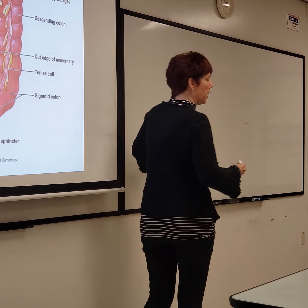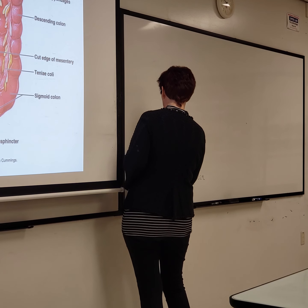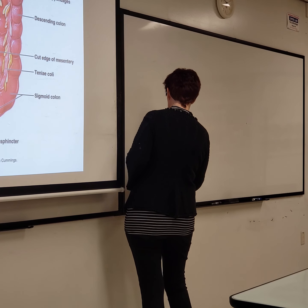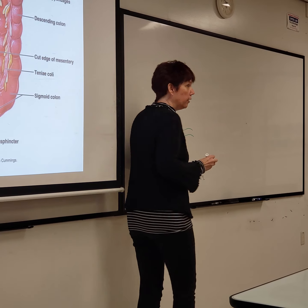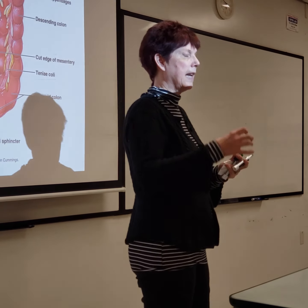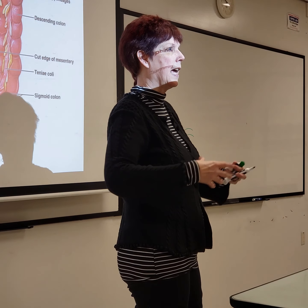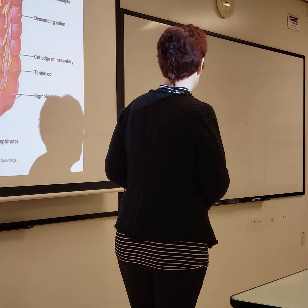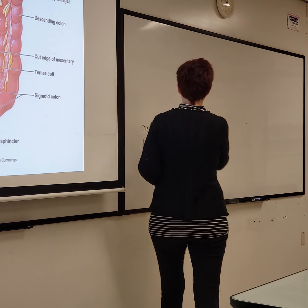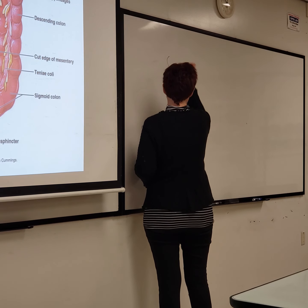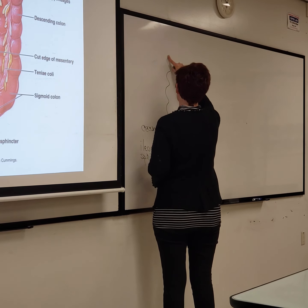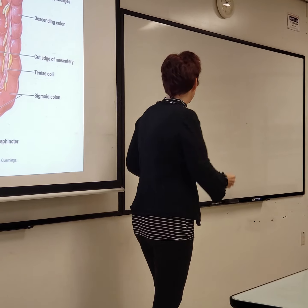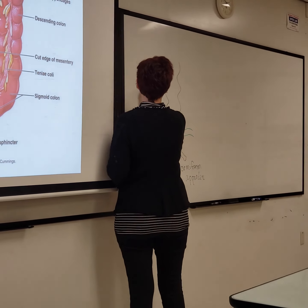This is identified as the ileocecal sphincter, with the same sequence of control. Parasympathetic — still the vagus nerve — causes relaxation of that sphincter, so food that's been digested and maximally reabsorbed moves from the small intestine into the large intestine. We have the ascending colon, which doesn't go quite as high on the right side as on the left, because of the liver.